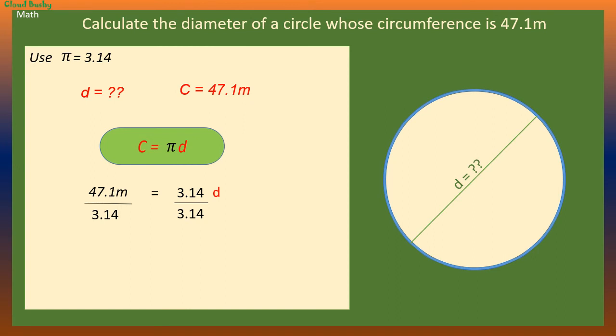Dividing both sides by pi we remain with D being equal to 47.1 divided by pi. So the diameter is 15 meters.